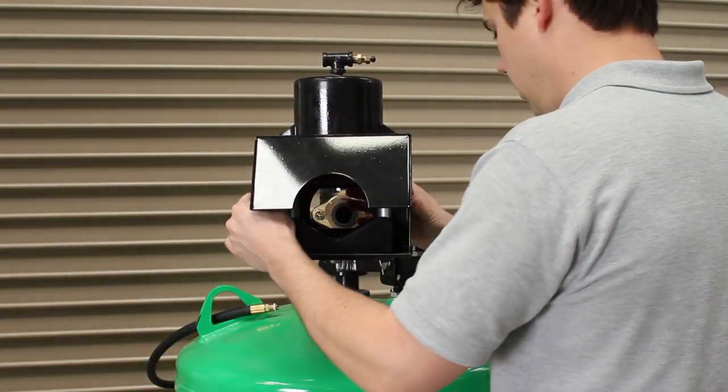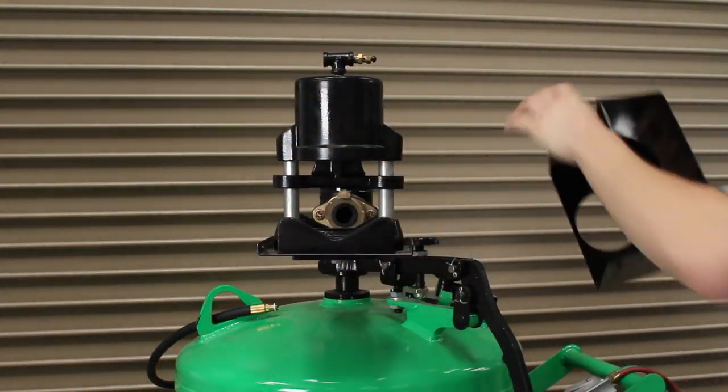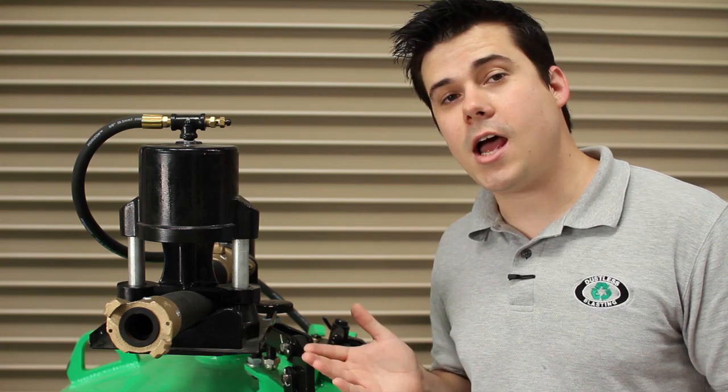For this demonstration I've removed the safety enclosure so that you can see what's going on. This is the pinch valve and its job is to clamp down on the pinch hose just like it's doing now.